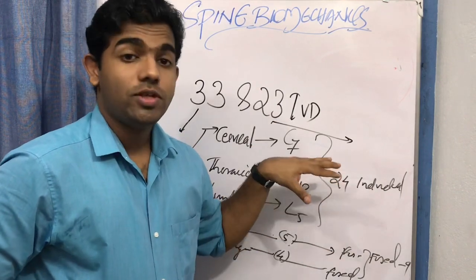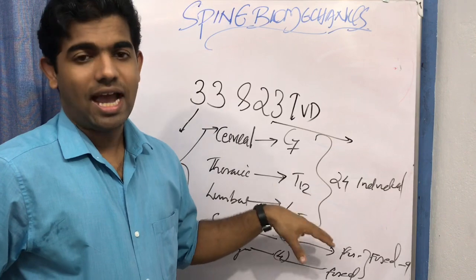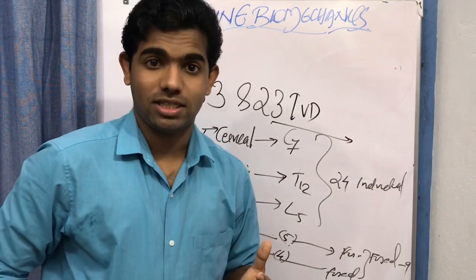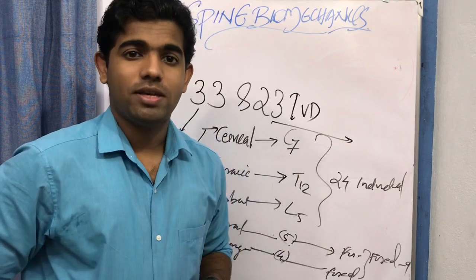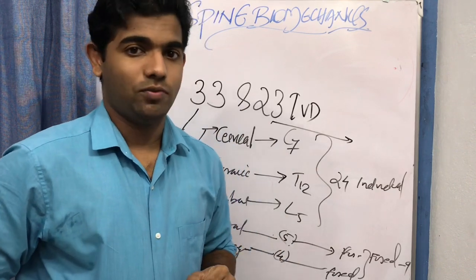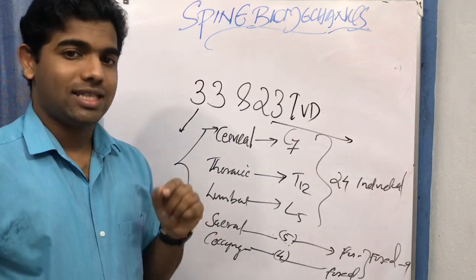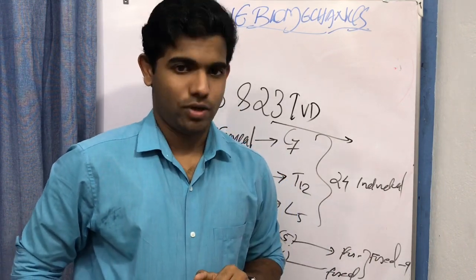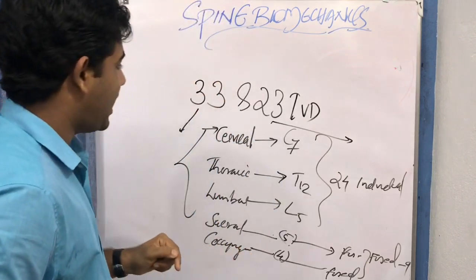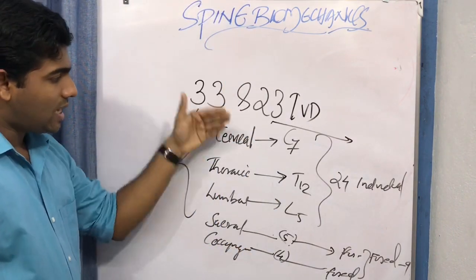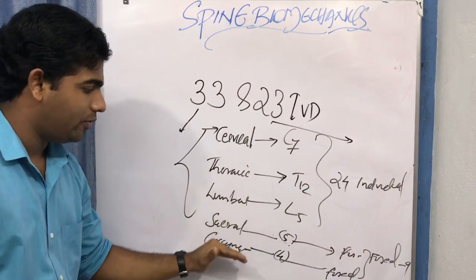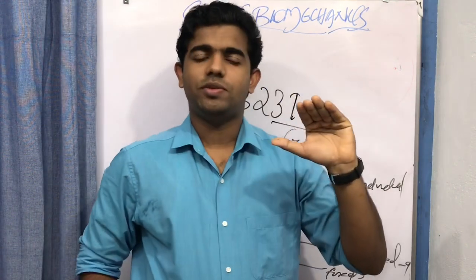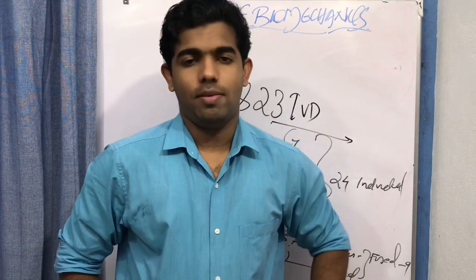Among the 33 vertebrae, 24 are individual ones divided into three regions: cervical (7), thoracic (12), and lumbar (5). The sacral and coccygeal regions have fused vertebrae of 5 and 4 respectively. A general pattern is that the size of the vertebra increases from the cervical to the lumbar region.